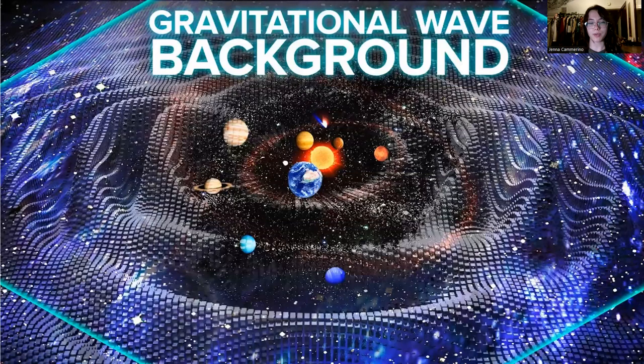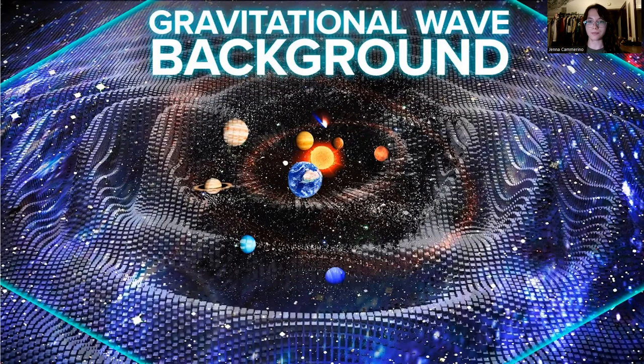What a gravitational wave background means is that essentially all throughout the universe there are these constant fluctuations occurring in space-time and they're very small fluctuations. They occur at a really low frequency. In fact, some of these signals have wavelengths as large as light years.